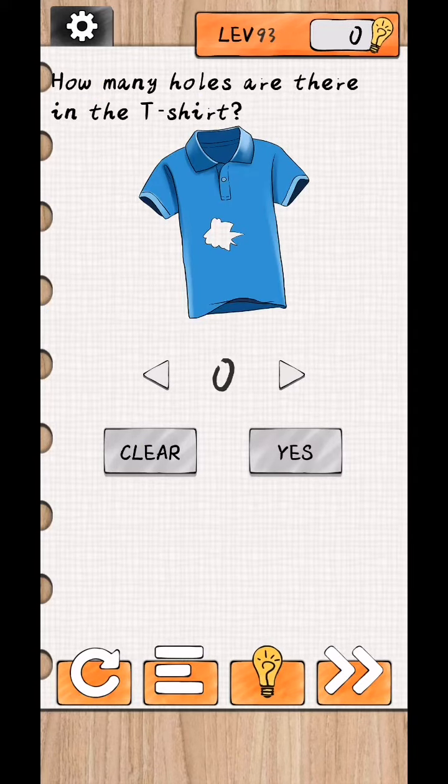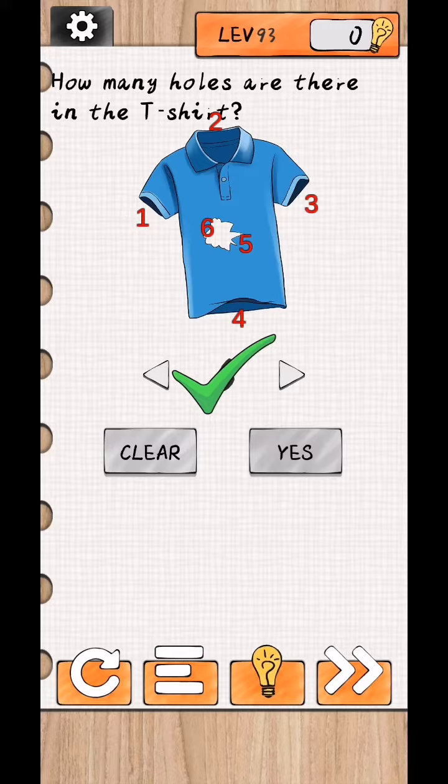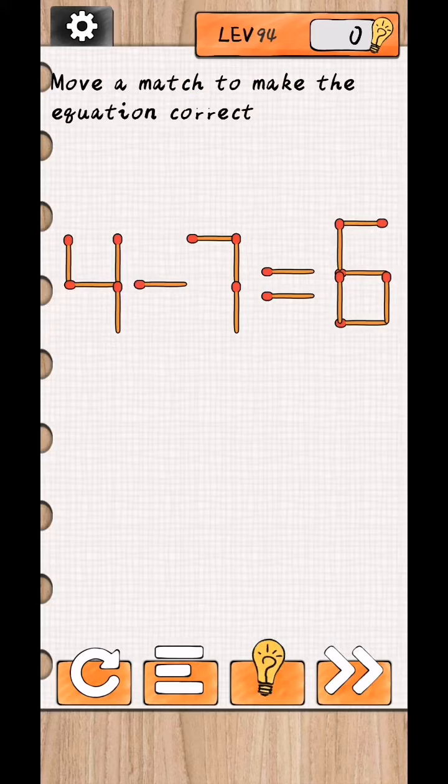Level 93: How many holes are there in the T-shirt? One, two, three, two, and one front and one back, four and six... six. Okay, level complete. Yes, like this. Got it. Level 94: Move a matchstick to make the equation correct.